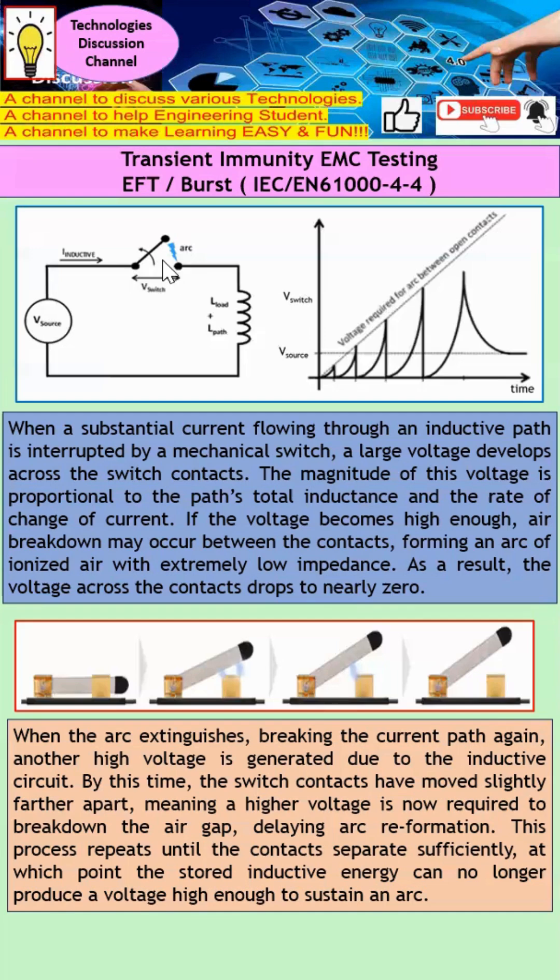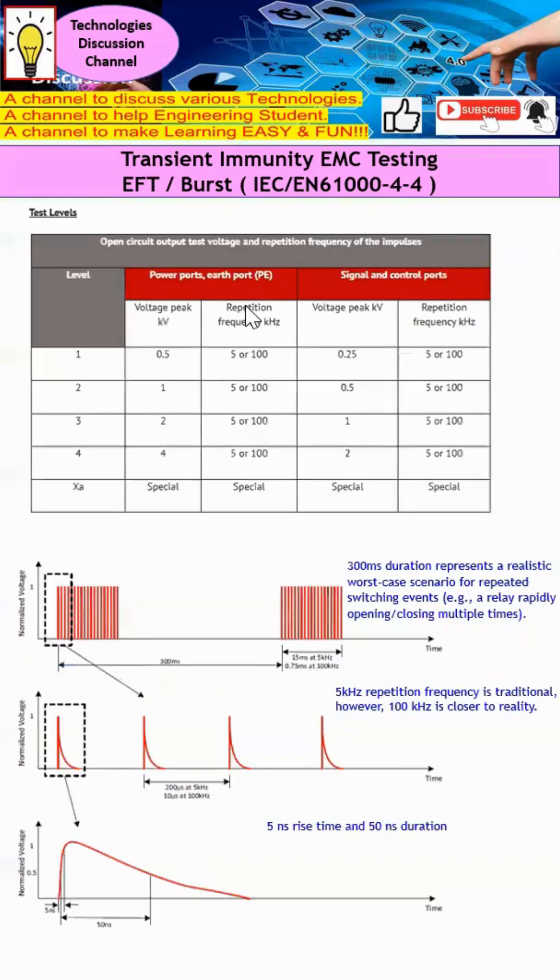Most of the time, when we actually have any electronics product that we actually make, we probably have a switch. So even if there is no switch, the power will be on and off, and because of this, you actually have some form of arcing effect. And this can be destructive to your electronics device.